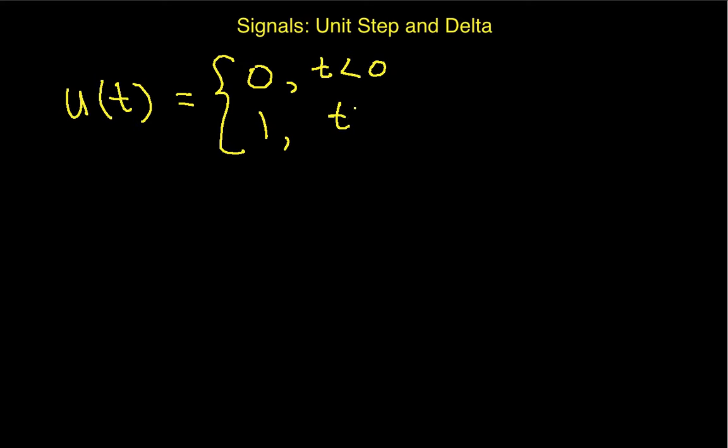If I graph this unit step function, it looks something like this. It's 0 for values of t less than 0, and then at a value of 0, it jumps up to 1. This distance here is 1. So this is what u(t) looks like.